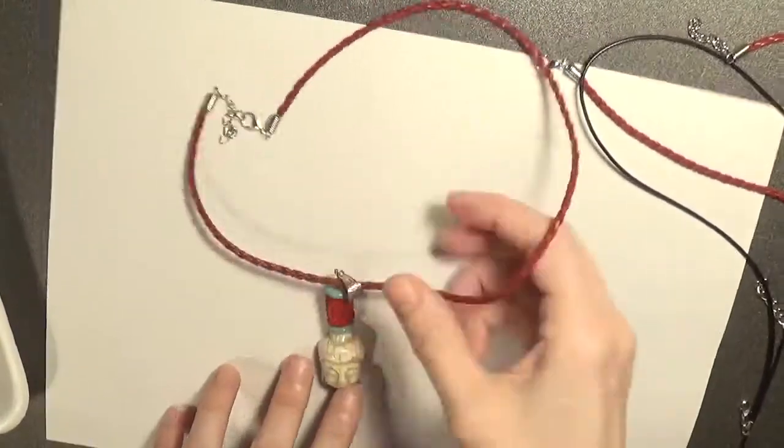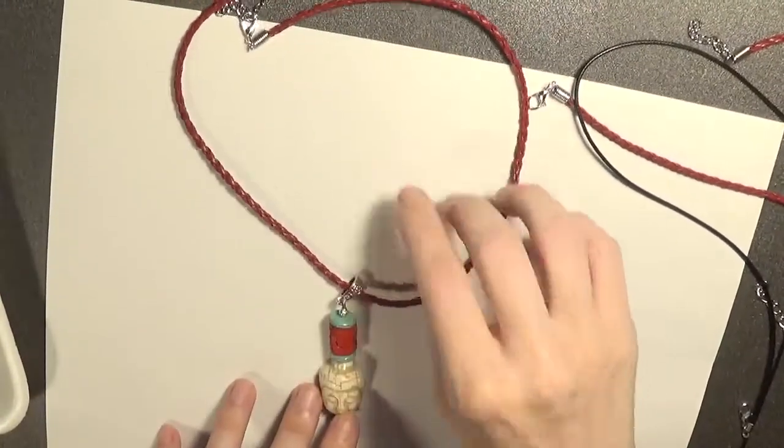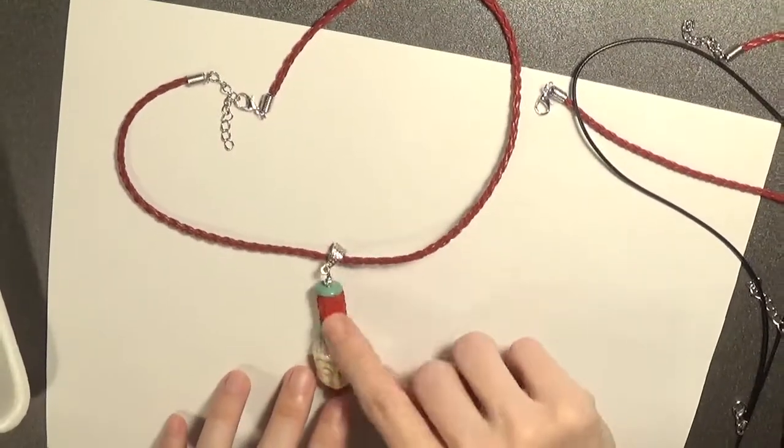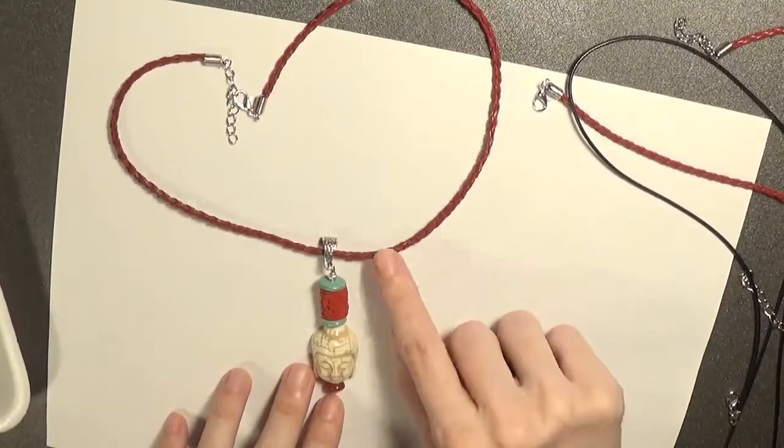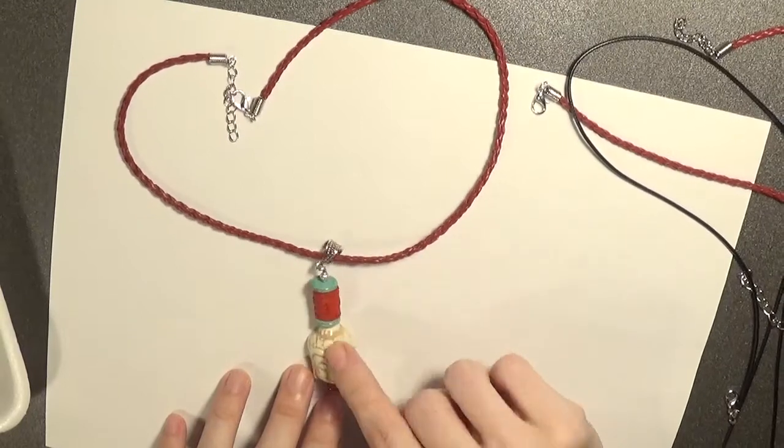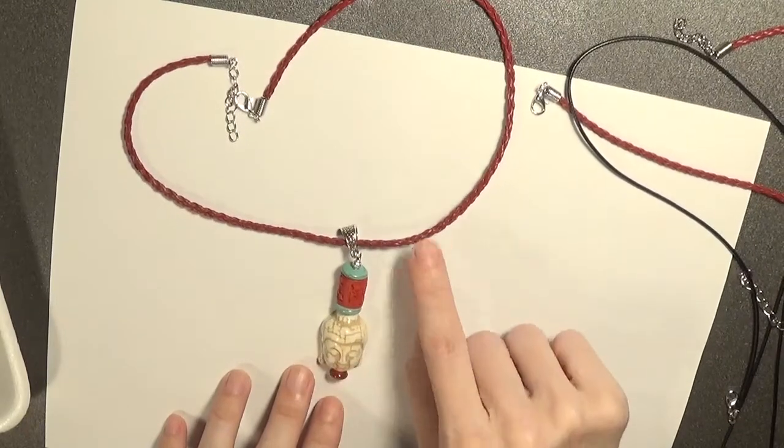So this is what the necklace looks like. I hope that it looks better now with the red thread. Let's go to the top of the box again and let's see what it looks like.